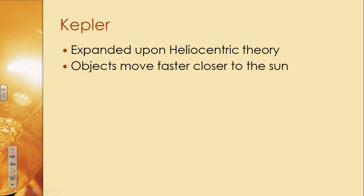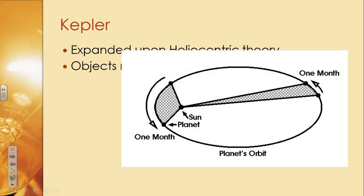So Kepler is going to expand upon the heliocentric theory, and his belief is that objects are going to move faster the closer they are to the sun. So the sun, he's not going to really explain what this is necessarily, but there's going to be some force that's going to make objects move faster the closer they are to the sun.